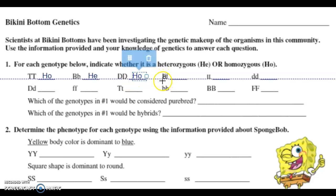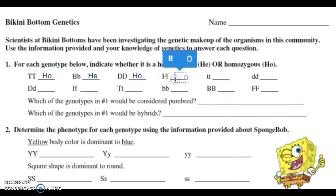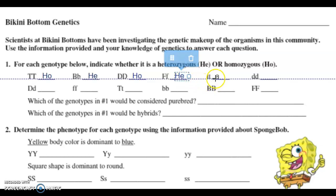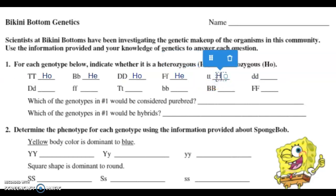Big F, little F — those are different, there's a dominant allele and a recessive allele, so that would be heterozygous. Little T, little T — they're the same. Homo means same, so those are homozygous. And they're both little letters, so it's homozygous recessive. That offspring would show the recessive trait.